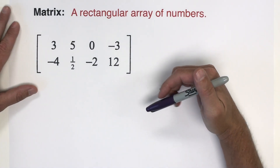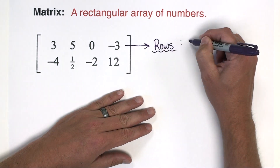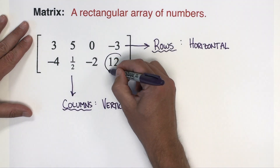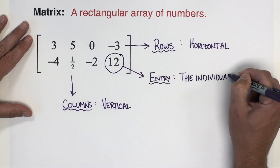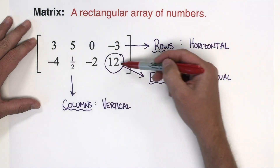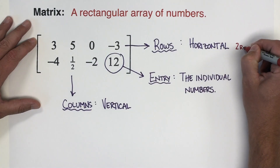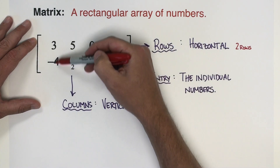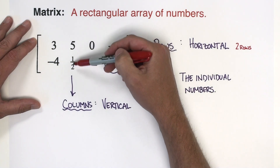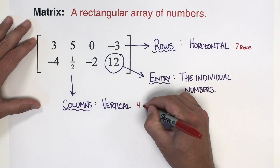Some vocabulary associated with the matrix that you're going to need to know. Within the matrix we've got a few things to know. First off, the numbers that go horizontally in the matrix are the rows. In this example right here we've got two rows. The numbers that come down vertically within the matrix, those are called columns. And in this particular matrix we have four columns.